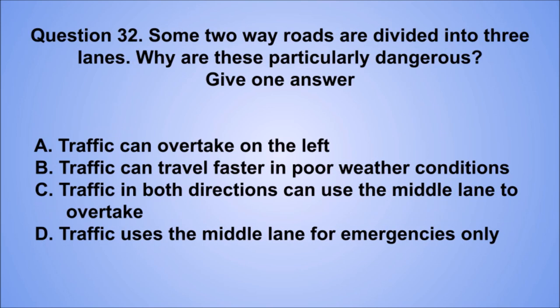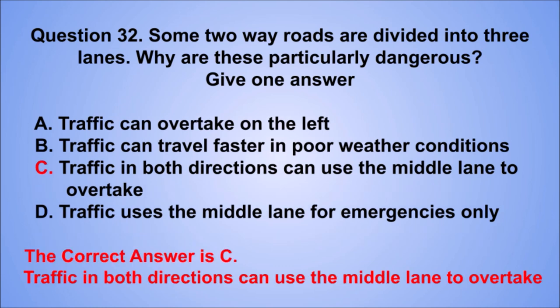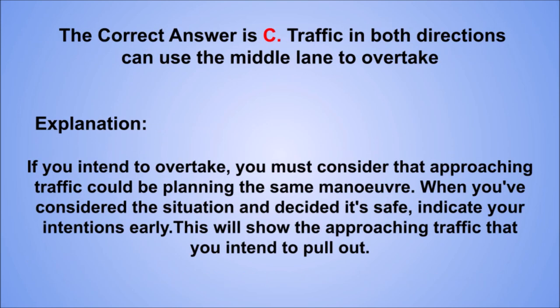Question 32. Some two-way roads are divided into three lanes. Why are these particularly dangerous? Give one answer. A. Traffic can overtake on the left. B. Traffic can travel faster in poor weather conditions. C. Traffic in both directions can use the middle lane to overtake. D. Traffic uses the middle lane for emergencies only. The correct answer is C, traffic in both directions can use the middle lane to overtake. If you intend to overtake, you must consider that approaching traffic could be planning the same maneuver. When you've decided it's safe, indicate your intentions early to show approaching traffic that you intend to pull out.